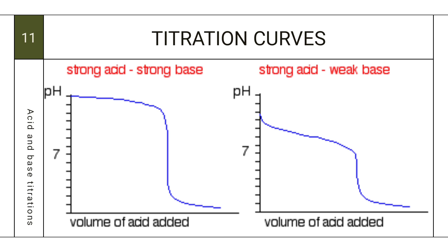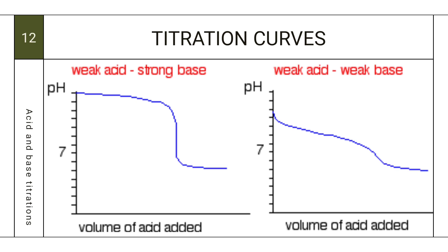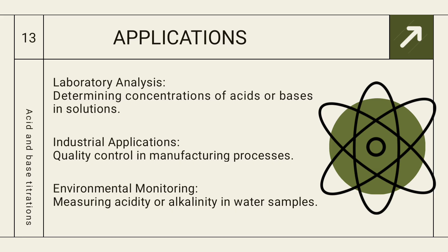Looking at the titration curve graphs: for strong acid and strong base, there is a sharp jump at the equivalence point reaching up to pH 12 or 11. For weak acid and strong base, the curve decreases but not as steeply, reaching about pH 6 at equivalence. For weak acid and weak base, the pH change is very gradual throughout the titration.